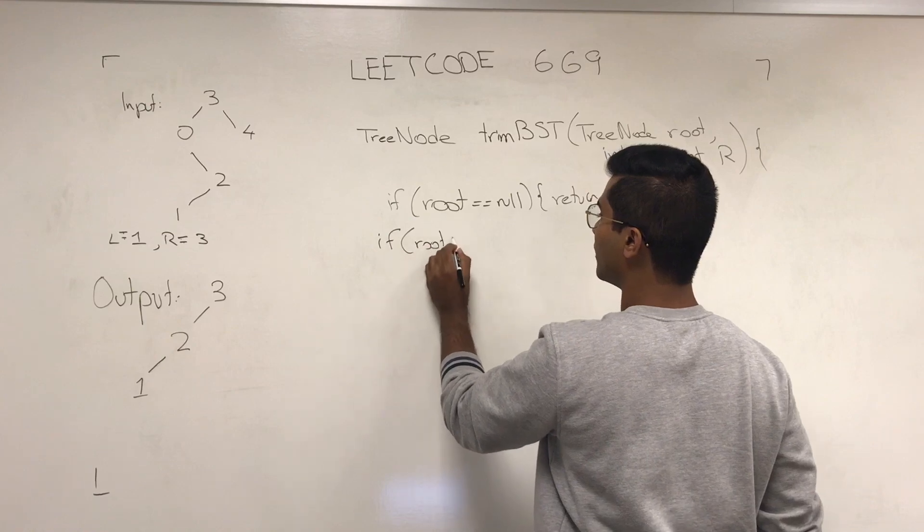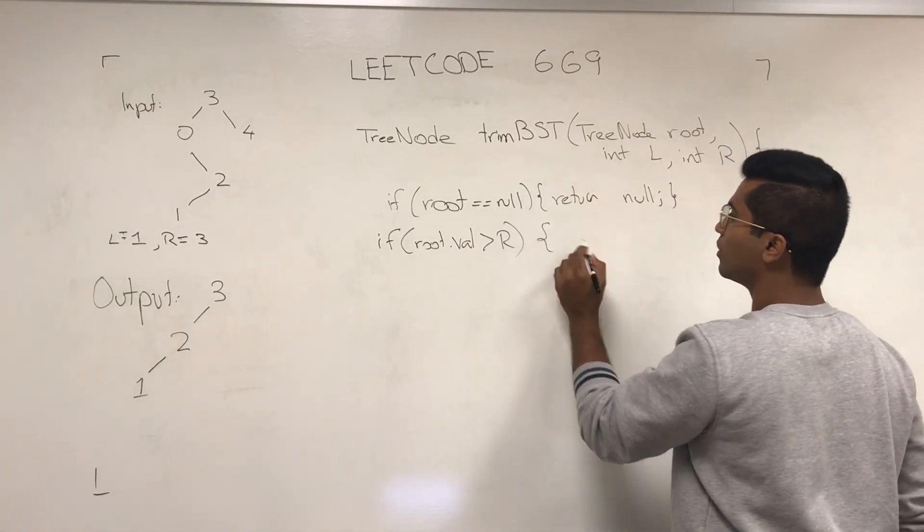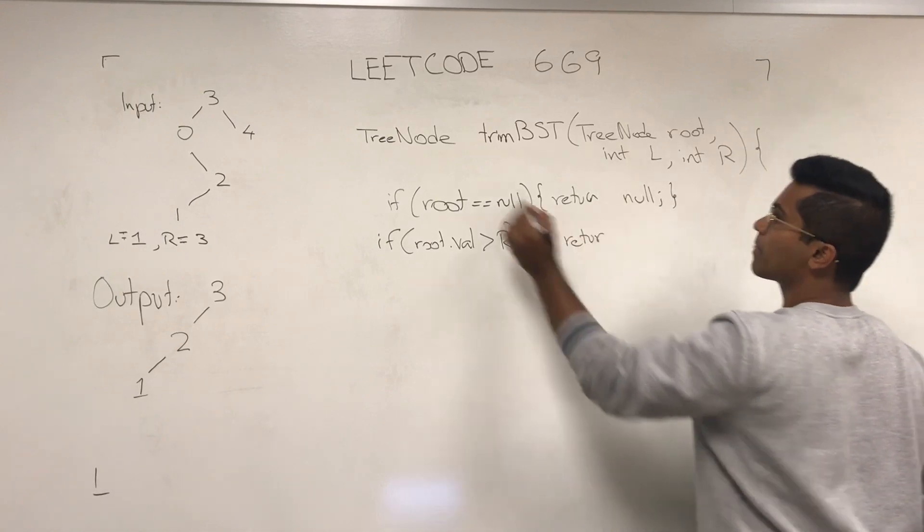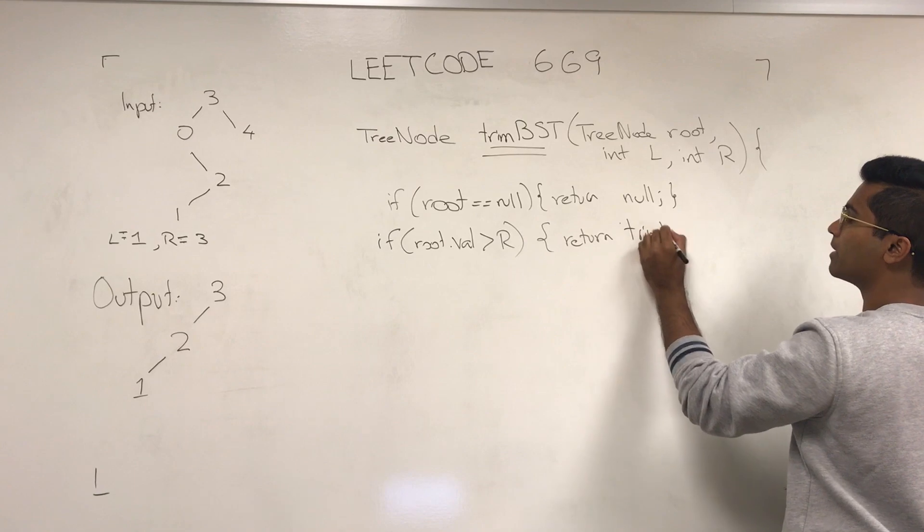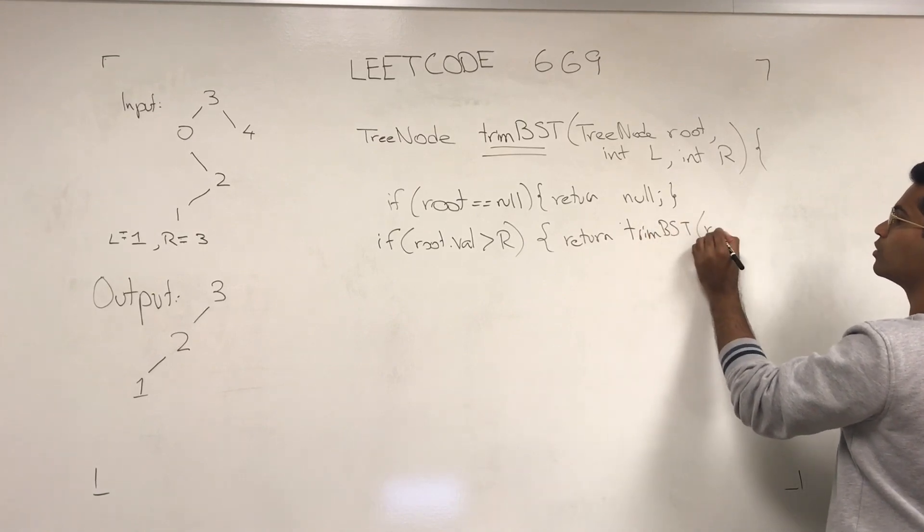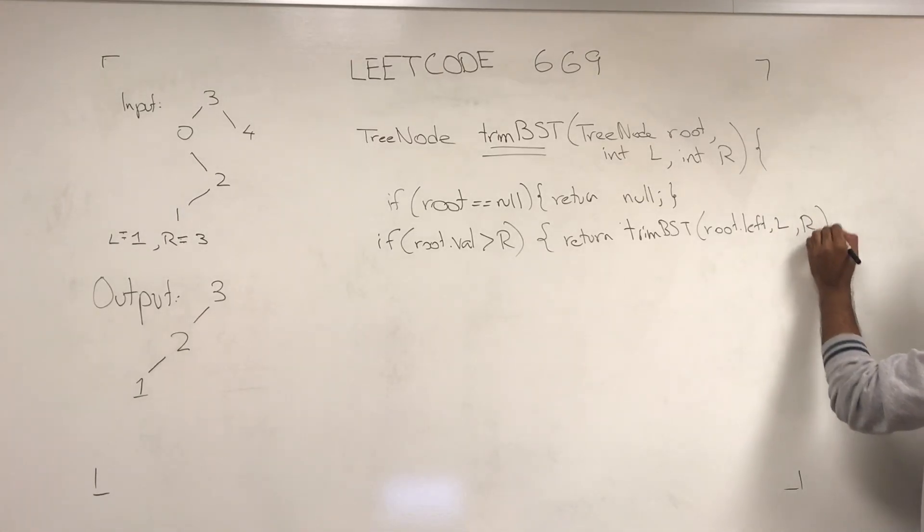Next, if root dot value is greater than R, we have to return trim BST root dot left, L and R.